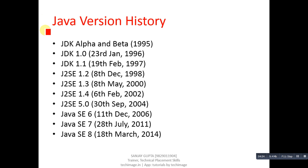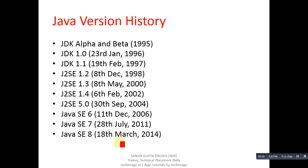This is the version history of Java. You can read the version name and the year in which each version was launched. It is very important, and you have to learn the latest version of Java which is Java SE 8.